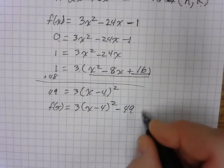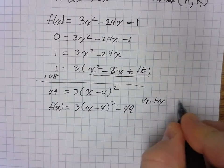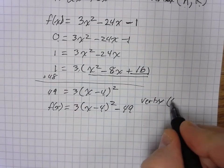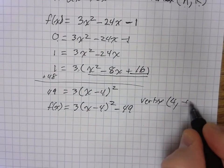So this is our vertex form. And our vertex would be located at 4, negative 49.